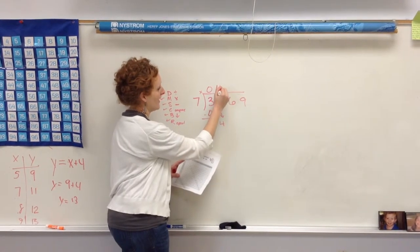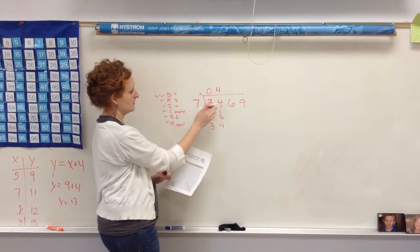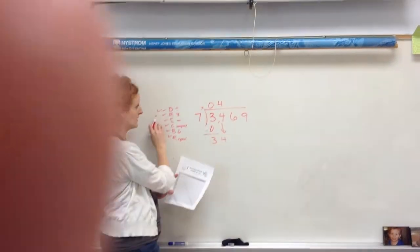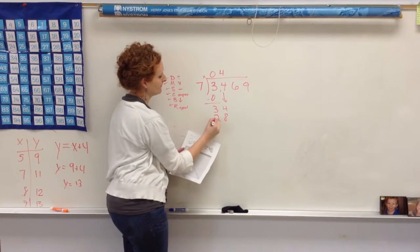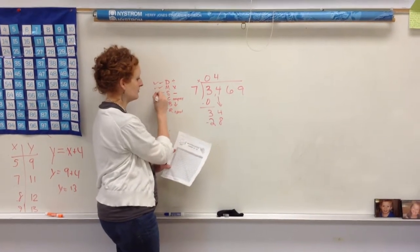So I've divided. 7 goes into 34 4 times, so now I need to multiply. 4 times 7 is 28. Now I need to subtract.